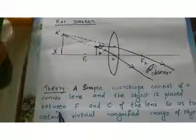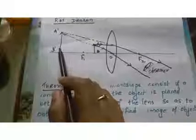Now let's discuss the theory of the simple microscope. A simple microscope consists of a convex lens, and the object is placed between the focus and optic center of the lens, so as to obtain a virtual magnified image of the object. This is the theory behind the simple microscope.